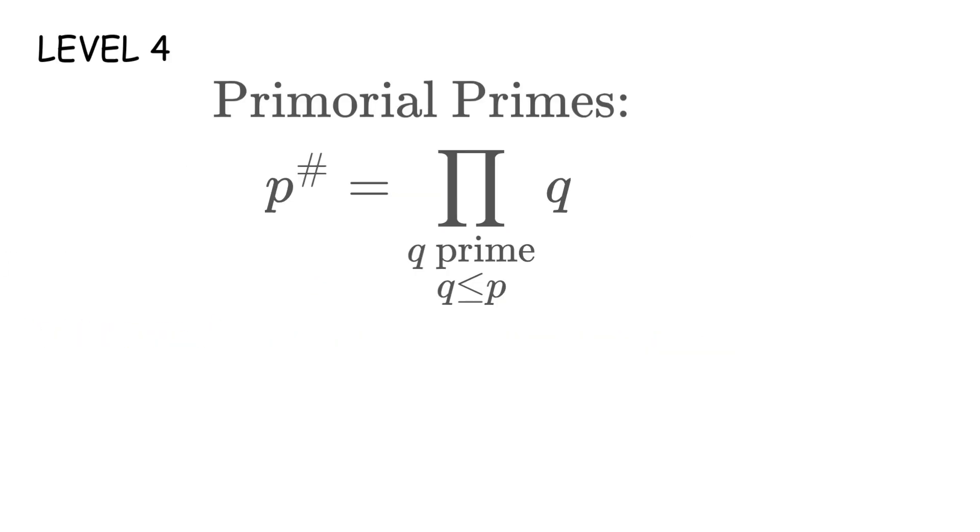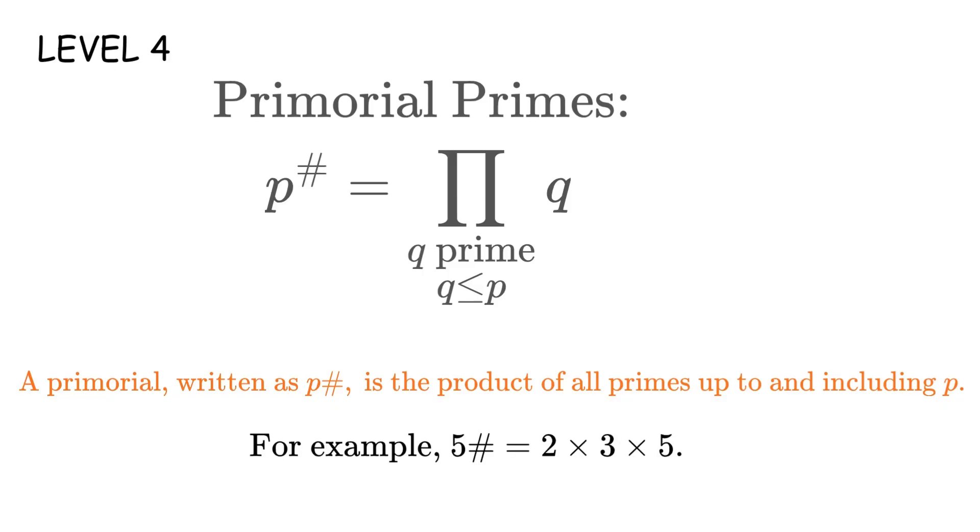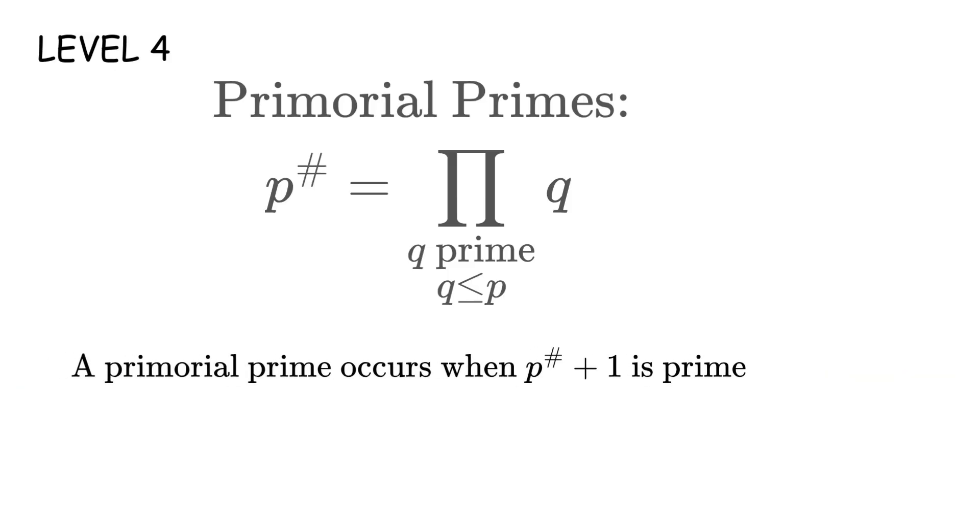Primorial primes. These are primes made from multiplying other primes together. A primorial, written as p sharp, is the product of all primes up to and including p. So 5 sharp means you multiply 2 times 3 times 5. A primorial prime is when p sharp plus 1, or p sharp minus 1, turns out to be prime.